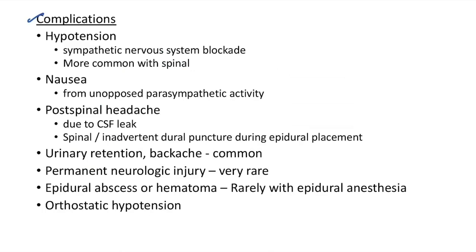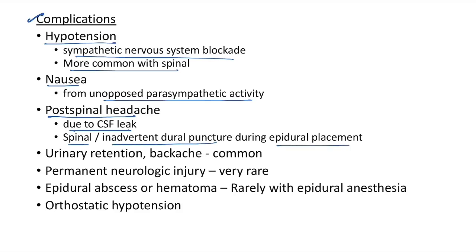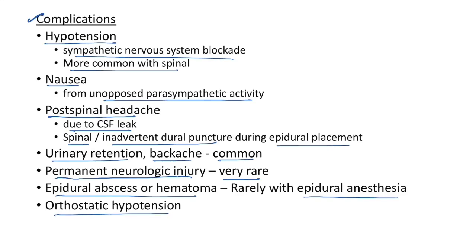Complications of spinal and epidural anesthesia: hypotension can occur due to sympathetic nervous system blockade and is more common with spinal than epidural. Nausea can occur due to unopposed parasympathetic activity and is also more common with spinal anesthesia. Post-spinal headache occurs due to CSF leak and can occur with spinal anesthesia or inadvertent dural puncture during epidural placement. Urinary retention and backache are common side effects of both. Permanent neurologic injury is very rare. Epidural abscess or hematoma can occur rarely with epidural anesthesia. Orthostatic hypotension is another side effect.